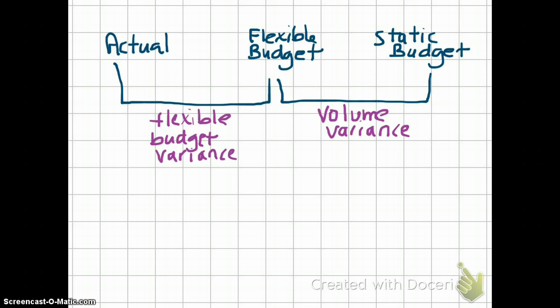Then we flexed our volume. We prepared a flexible budget to reflect actual volume. So the flexible budget is a budget with actual volume. We had actual numbers on the leftmost side. The difference between your static budget and flexible budget was called the volume variance, and the difference between your flexible budget and the actual was called the flexible budget variance.